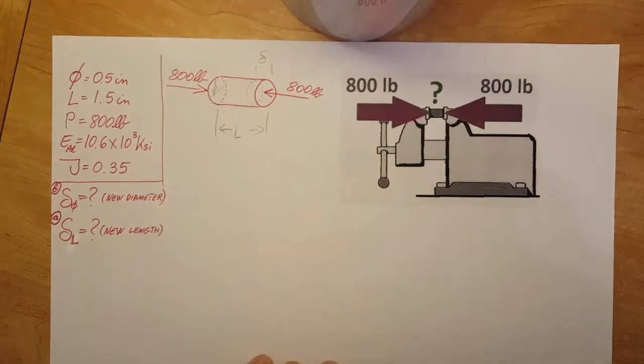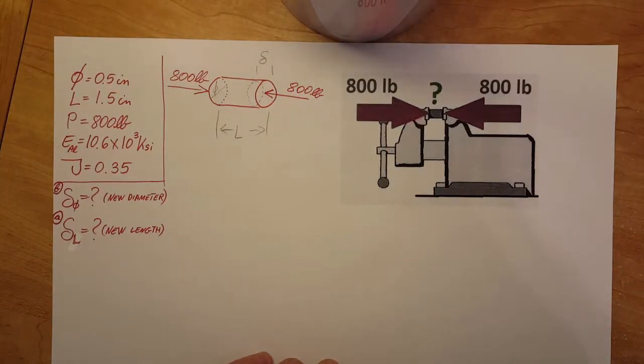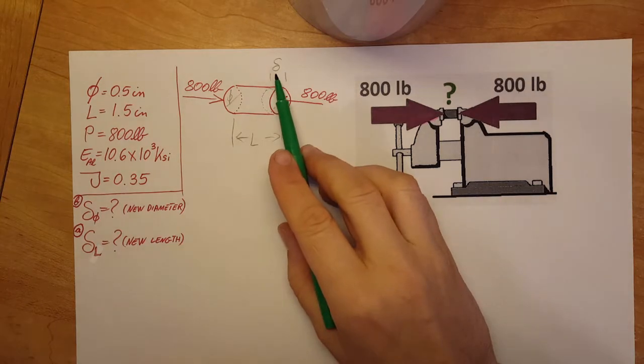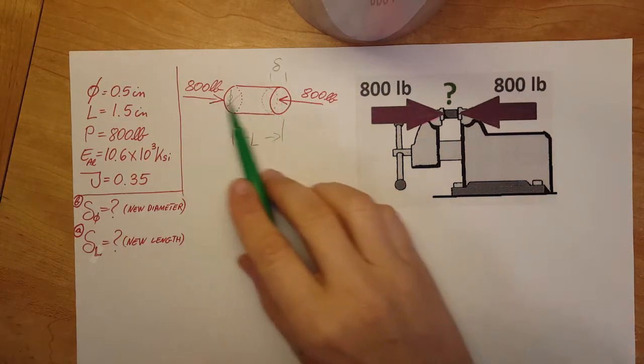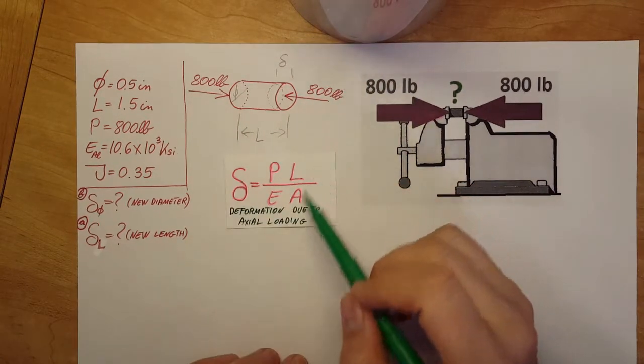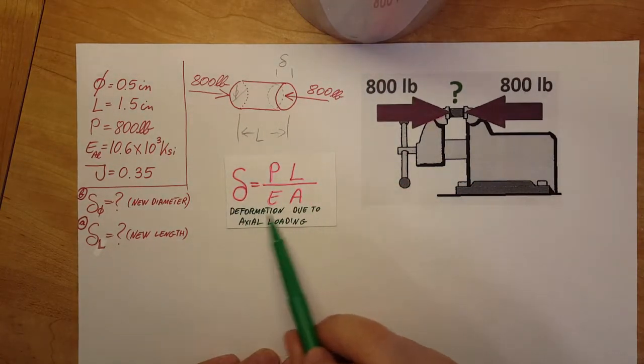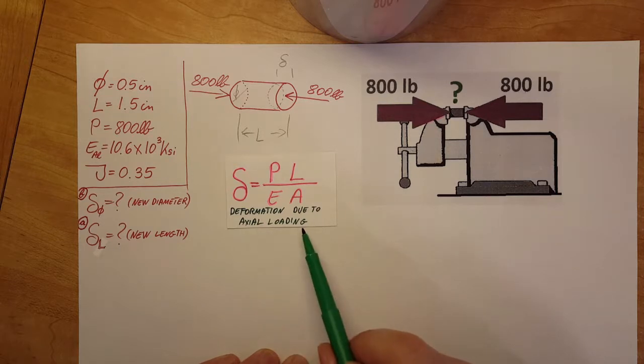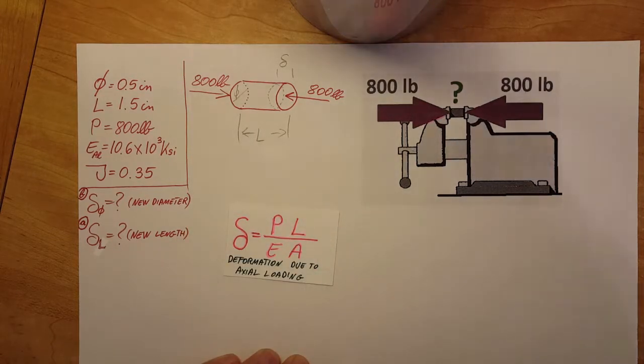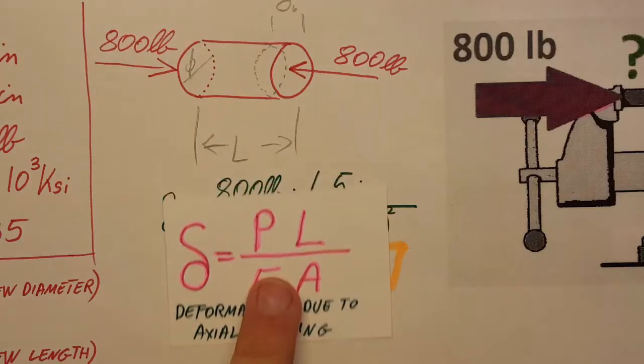So let's get started. In order to find the deformation in its length, we can see that this is a simple axial loading situation. Therefore we're going to use the deformation due to axial loading formula. I'm going to write it up, plug it in, and find the value.